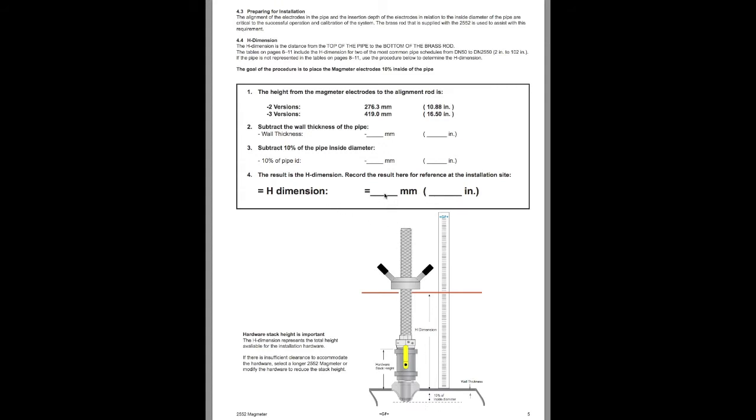This remaining number is your H dimension. So bottom of the brass insertion rod to the top of the pipe. That's your H dimension.